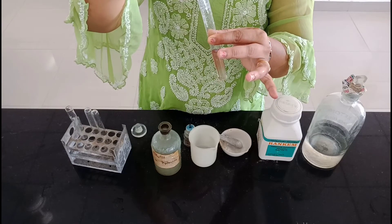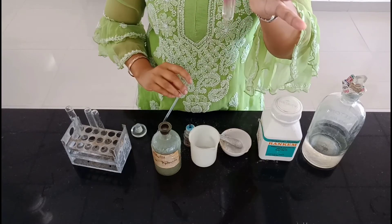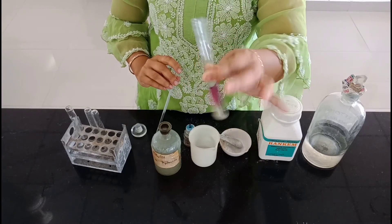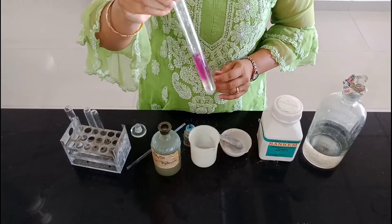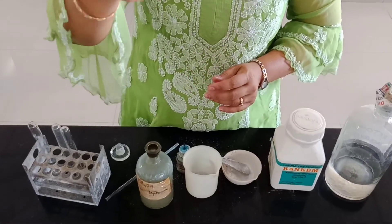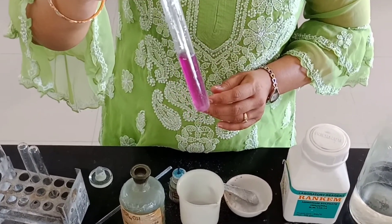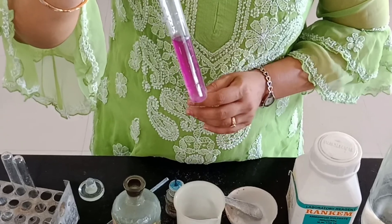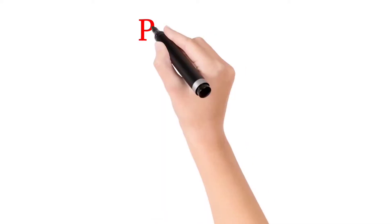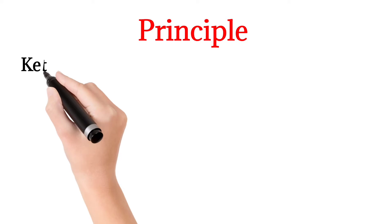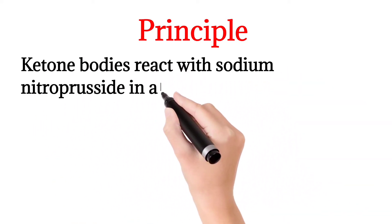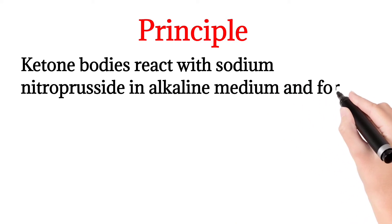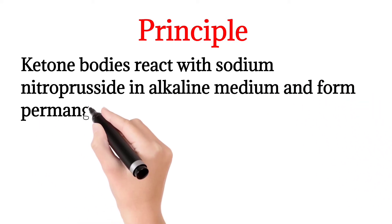If it turns into permanganate color, that means ketone bodies are present in the urine sample. You can clearly see that permanganate color has developed. So the principle is: ketone bodies react with sodium nitroproside in alkaline medium and form permanganate color.